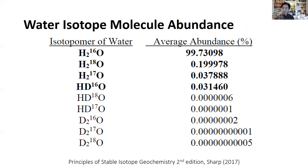Following up on this, we're going to talk about water isotope molecules and their abundance. We know that the chemical formula of water is H₂O, and we can have all different varieties or combinations of those stable isotopes to produce different water isotope molecules, or isotopimers, or isotopologs. The ones shown in bold are the most abundant and the most important for paleoclimate studies. First we've got H₂¹⁶O, which consists of two units of protium and one unit of oxygen-16 — by far and away the most abundant, at 99.7% of all water molecules.